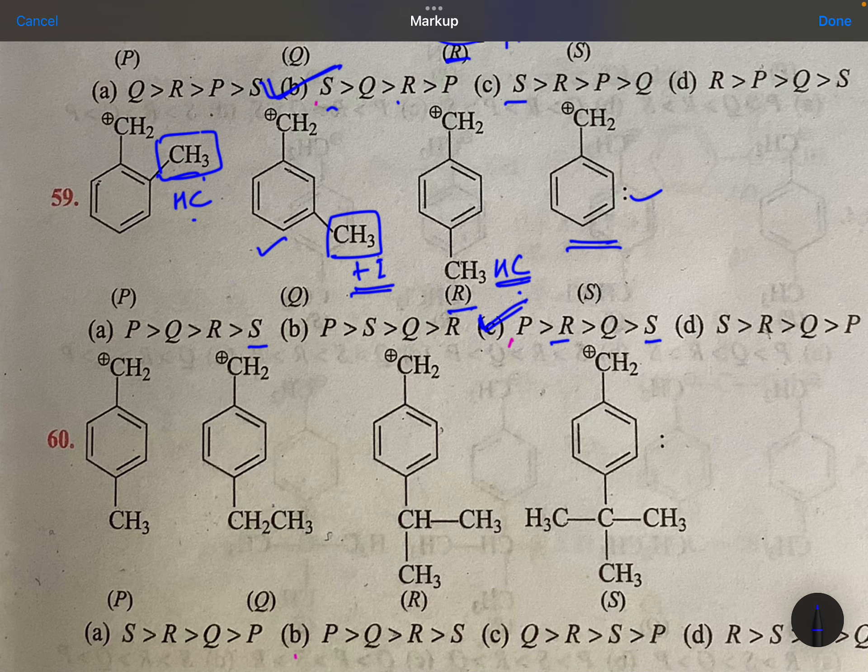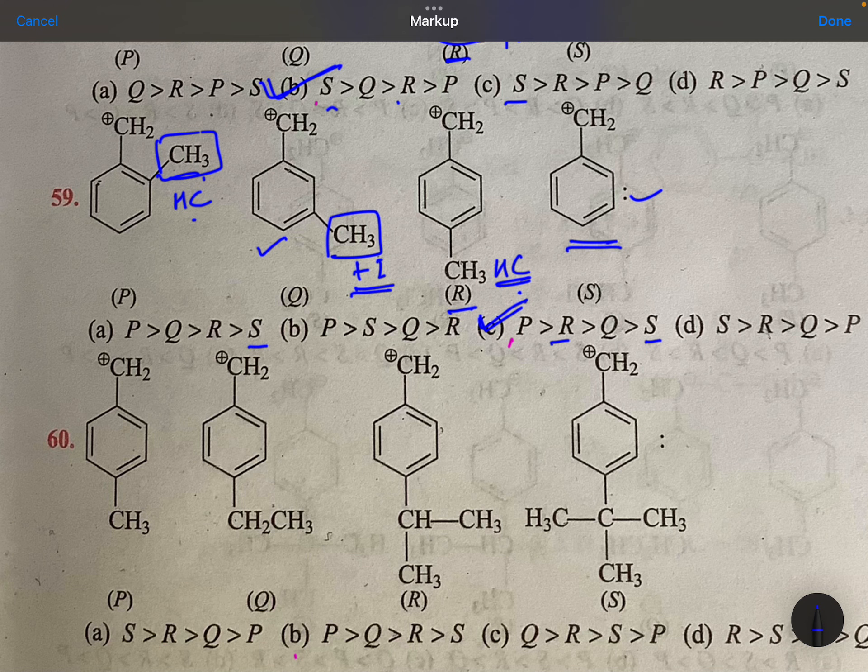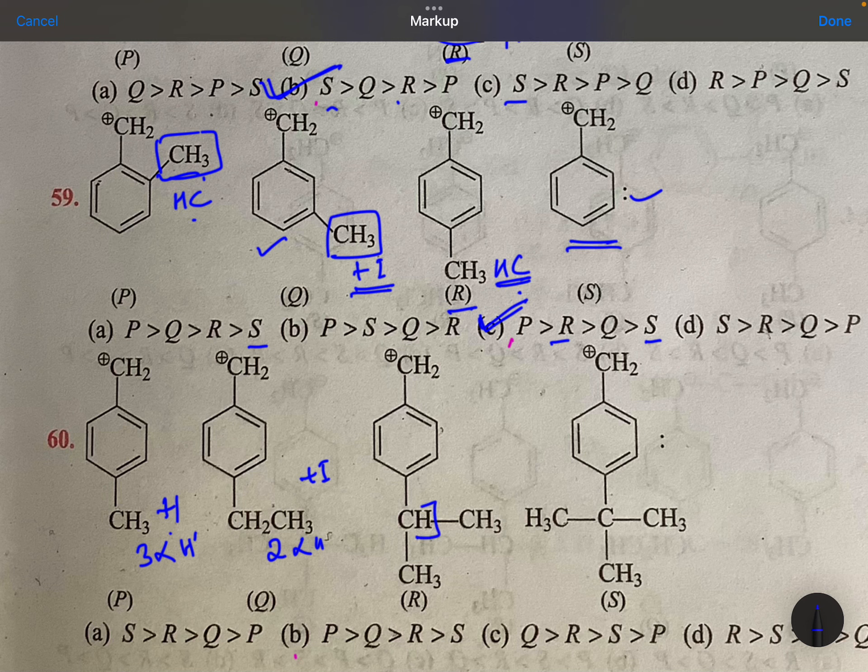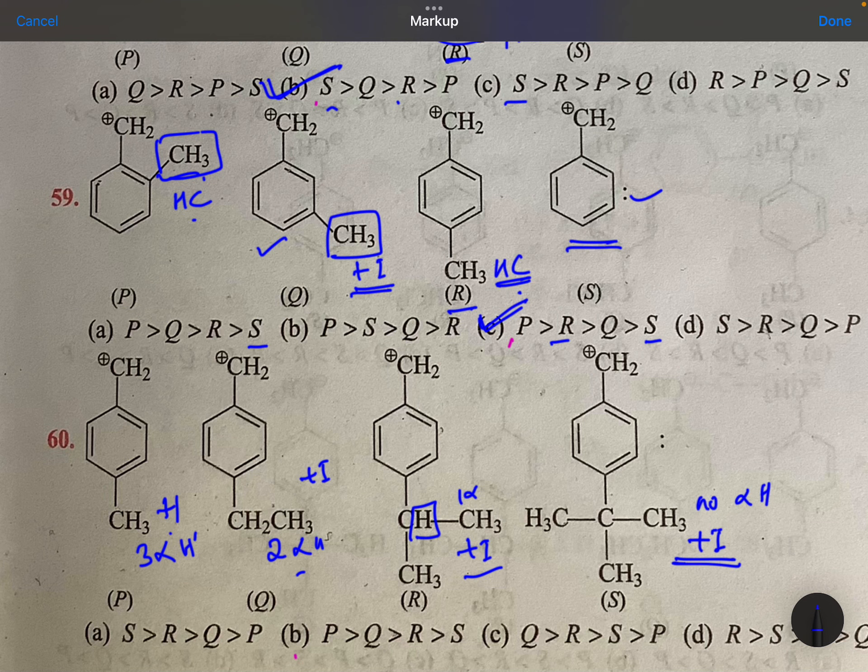Very good questions on this. This is methyl. Here plus I and three alpha hydrogens. Here plus I but two alpha hydrogens. Here only one alpha hydrogen, plus I. Here no alpha hydrogens but plus I. Plus I, if you see, this plus I is stronger than this, than this, than this. But hyperconjugation is more pronounced here. So PQRS, P must be very, very stable. Because more alpha hydrogens, maximum hyperconjugation, not inductive effect.